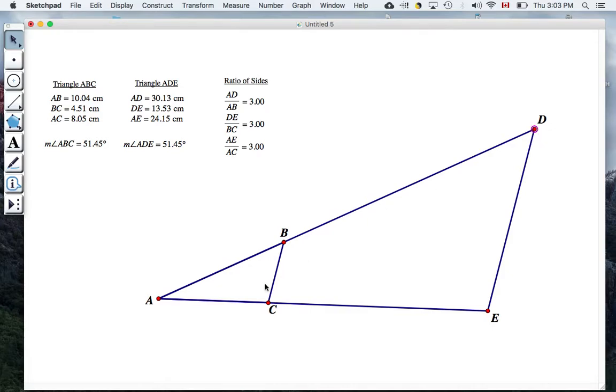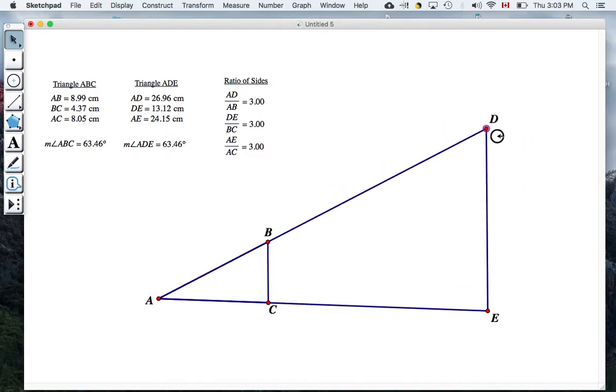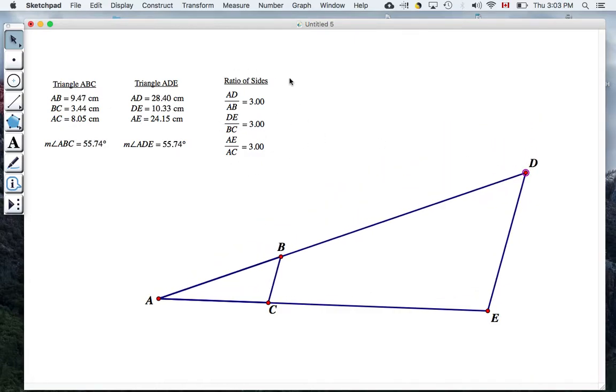Okay, so this small triangle and this bigger triangle are similar triangles, which means that this bigger triangle is always going to be three times the size of this smaller triangle, no matter how I change its shape, and so this ratio is always three, even though these numbers are changing. These numbers are always three times as big as these numbers, and the angles are always corresponding.